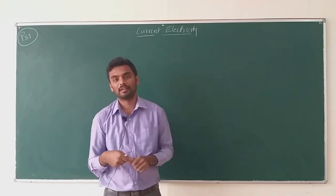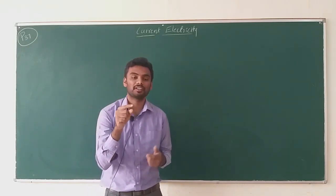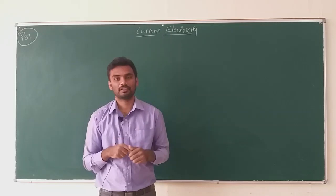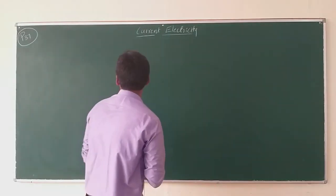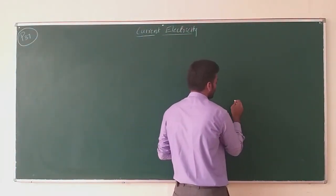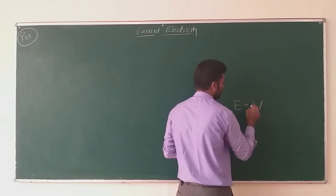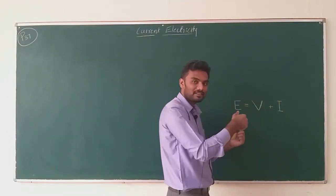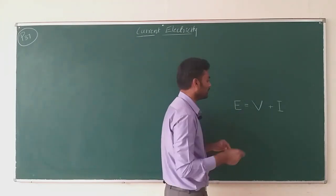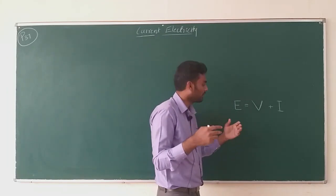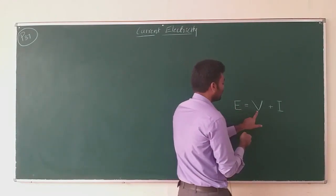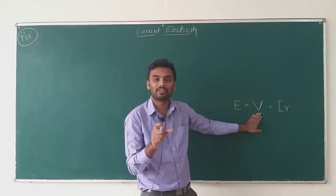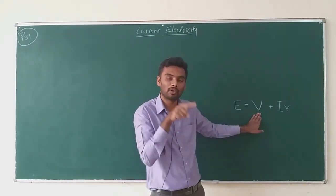We also got the idea about the connection between current in the circuit, EMF of the cell, internal resistance of the cell, and the potential difference across the cell. The expression we obtained was: total EMF E equals the actual potential difference when there is certain current flowing, plus current in the circuit times internal resistance. Current inside the cell and outside the cell is always the same.